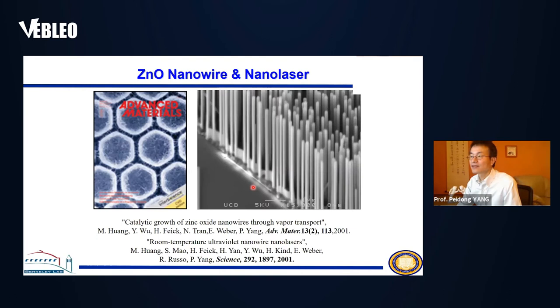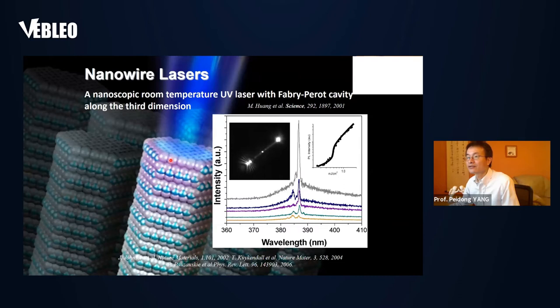Early on, we spent quite an amount of effort looking at large bandgap semiconductors like zinc oxide and gallium nitride. These are single-crystalline, cylindrical, one-dimensional nanoscopic features, and they can actually serve as nanoscopic lasers—essentially serving as a nanoscopic Fabry-Pérot cavity at room temperature, emitting UV light because of their large bandgap.